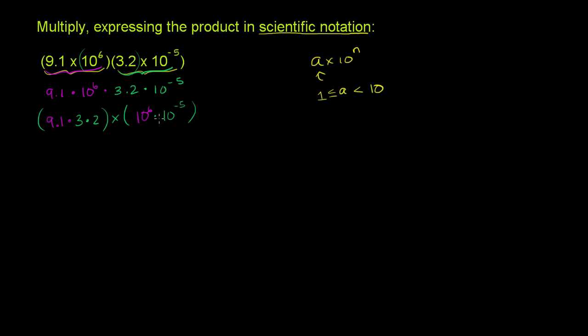And the reason why this is useful is that this is really easy to multiply. We have the same base here, base 10, and we're taking the product, so we can add the exponents. So this part right over here, 10 to the sixth times 10 to the negative five, that's going to be 10 to the sixth minus five power, or essentially just 10 to the first power, which is really just equal to 10.